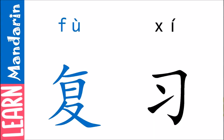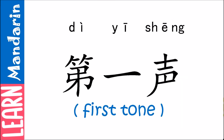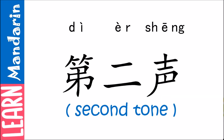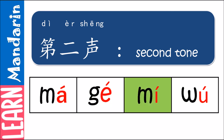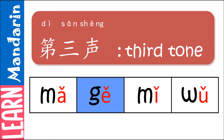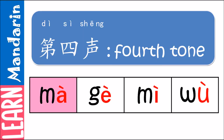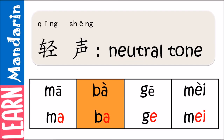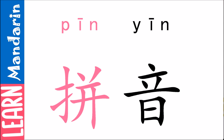Let's review all the tones. Are you ready? Here we go. 第一声: 妈, 哥, 咪, 乌. 第二声: 马, 哥, 咪, 乌. 第三声: 马, 哥, 咪, 乌. 第四声: 马, 哥, 咪, 乌. 轻声: 妈妈, 爸爸, 哥哥, 妹妹. And those are all the different tones of 拼音.